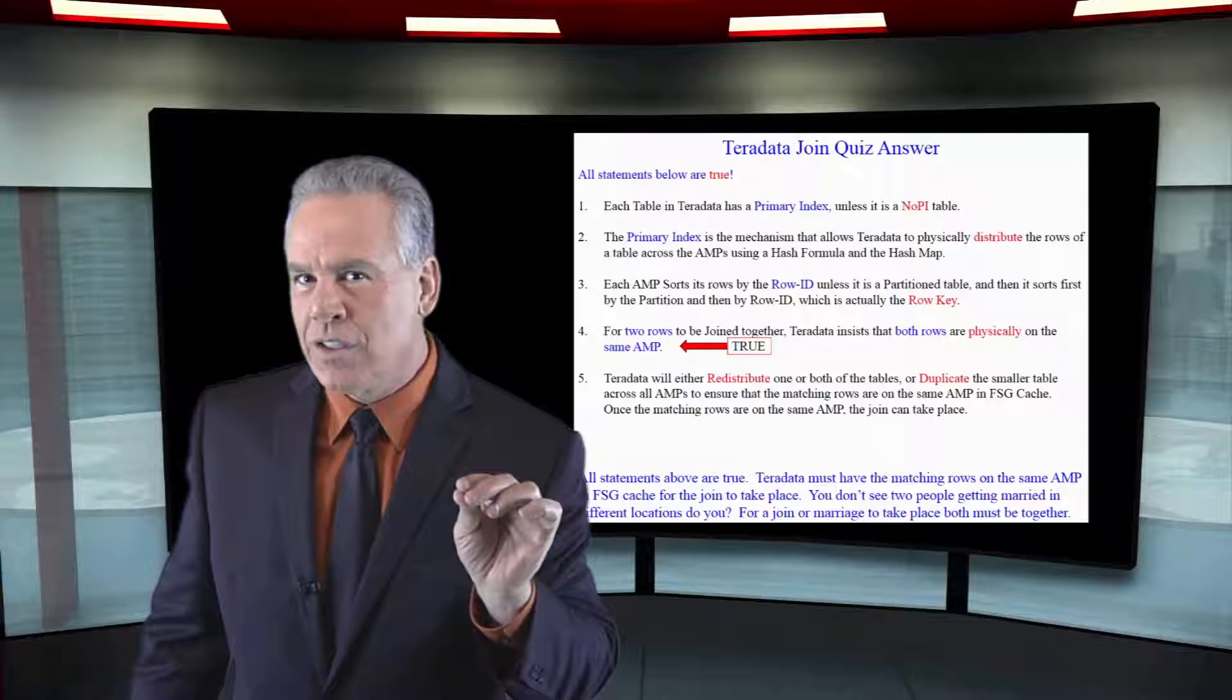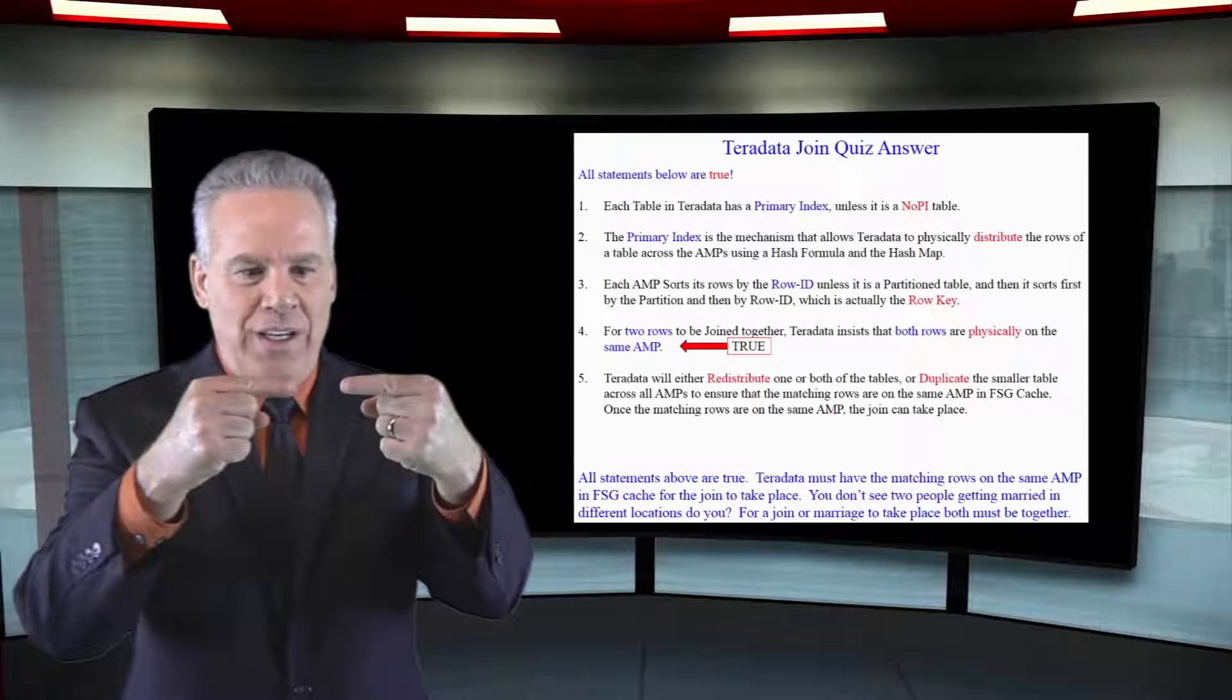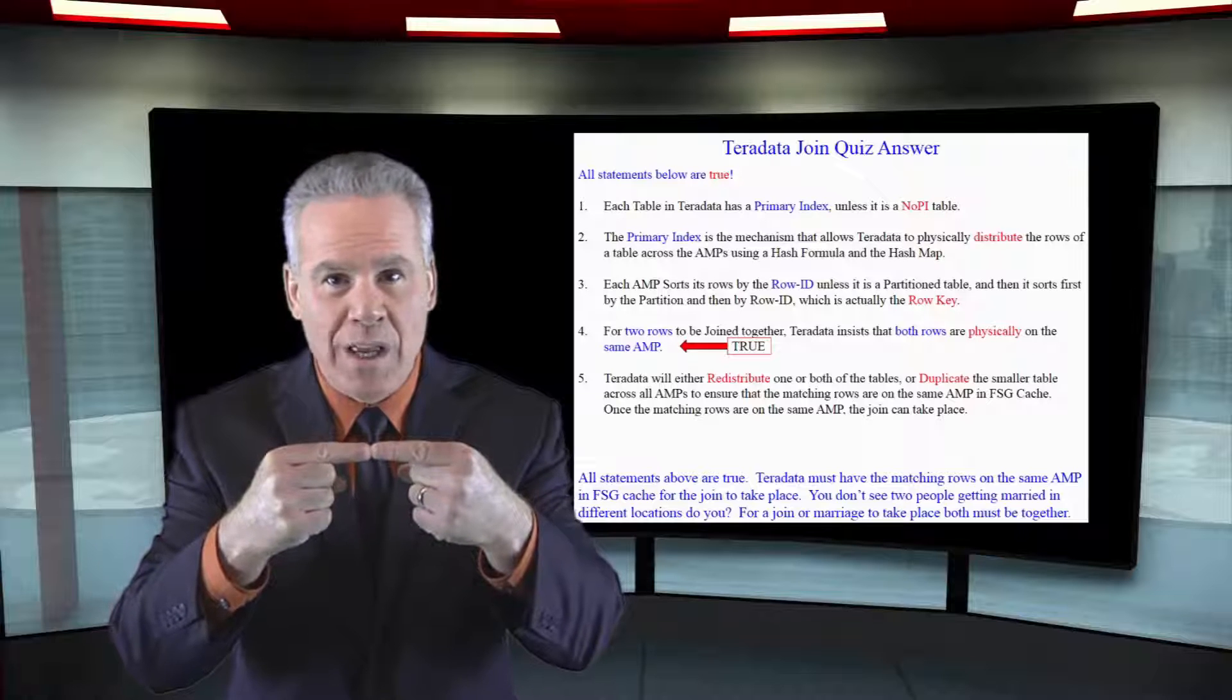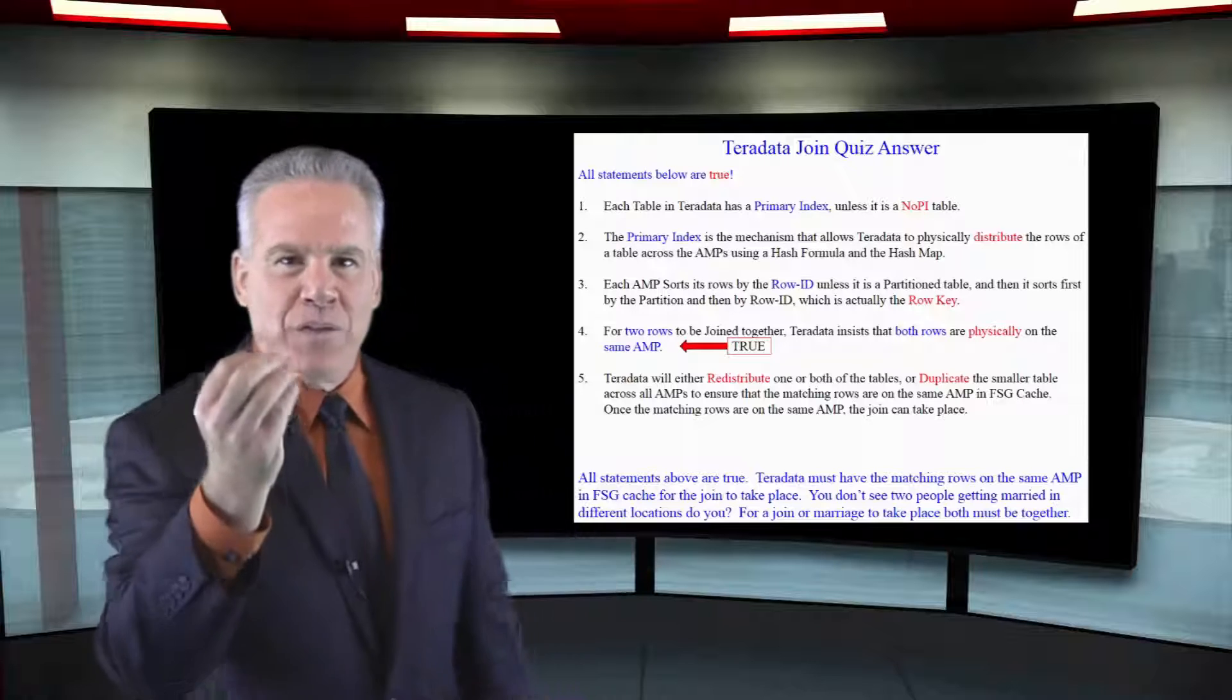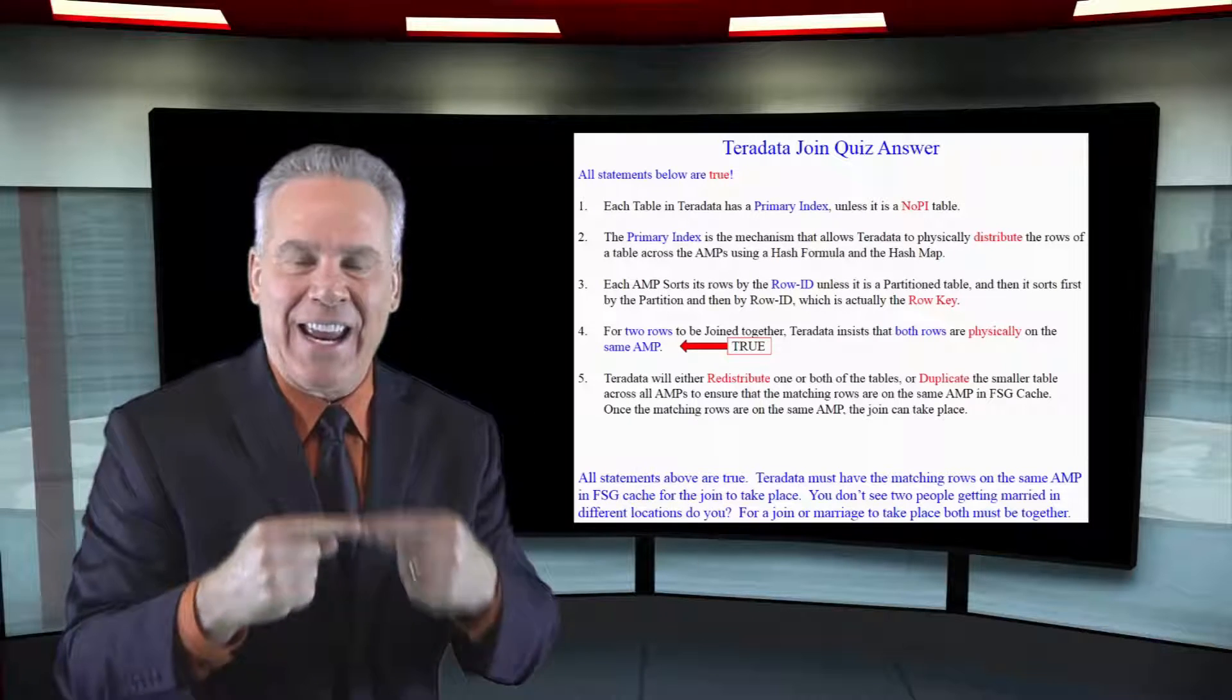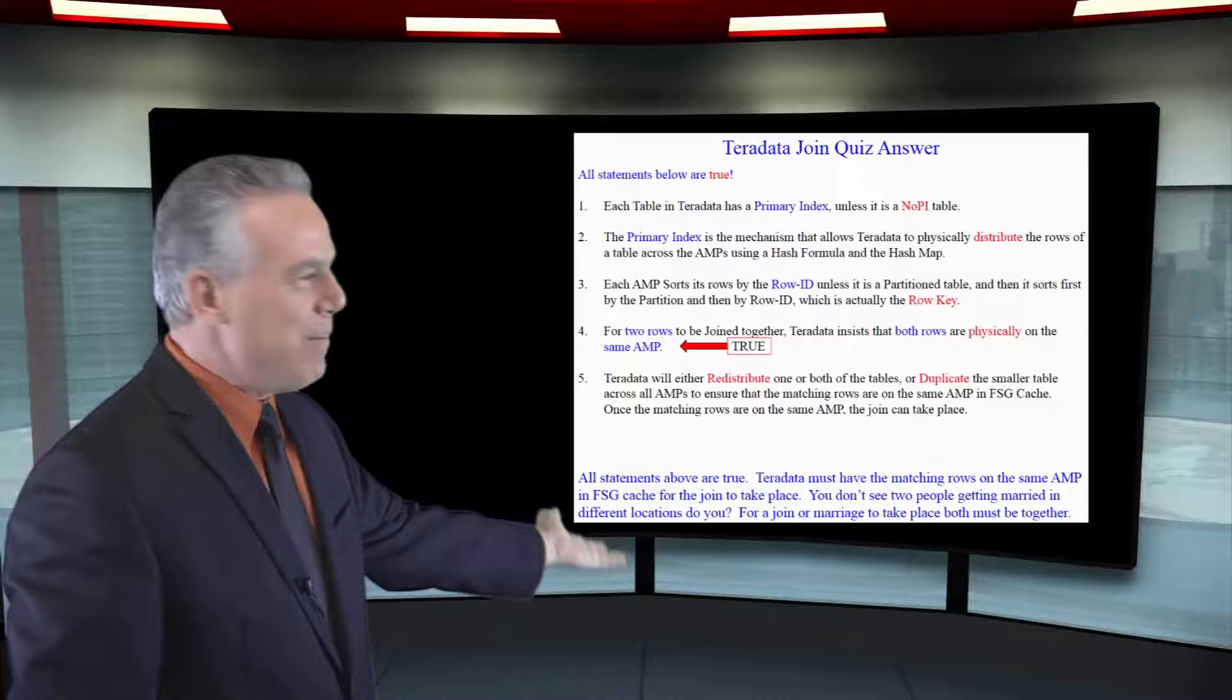Listen to me like you've never listened before in your life. For two rows to be joined together, they must be in the same memory pool. Each amp has their own memory and their own disk. For two rows to be joined, they must find their way to an amp and they must be together on that amp. So number four, my friends, is a true statement.